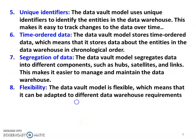Fifth, unique identifier — the data vault model uses unique identifiers to identify the entities in the data warehouse, so each product has a unique number to locate it. Sixth, time-oriented data — the data vault stores data in chronological order, with product data stored with reference to the date of manufacturing or testing. Seventh, segregation of data — the data vault segregates data into different components such as hub, satellite, and link, with reference to the type of product and type of data.